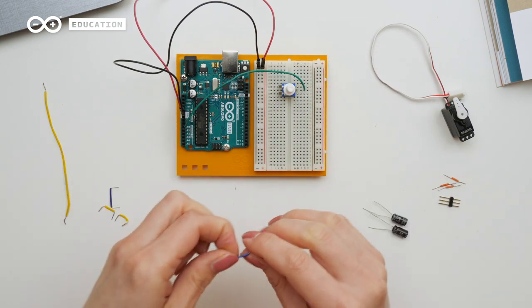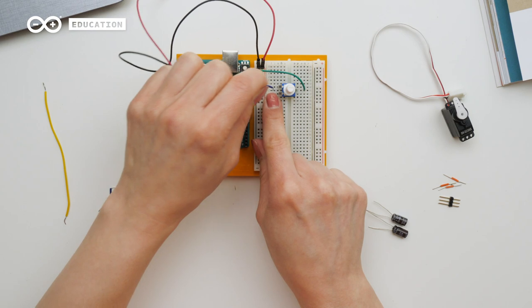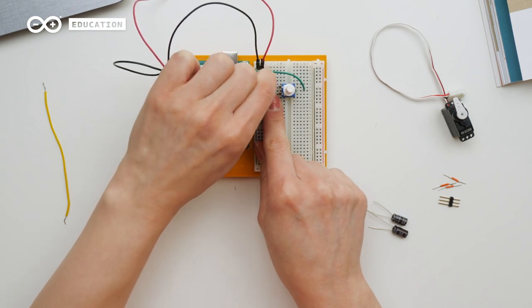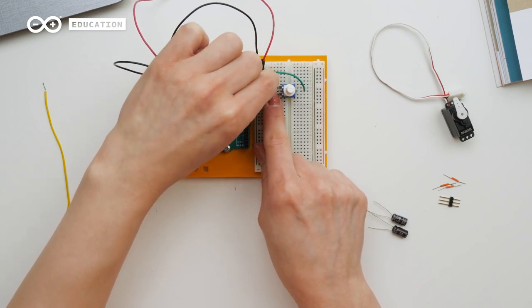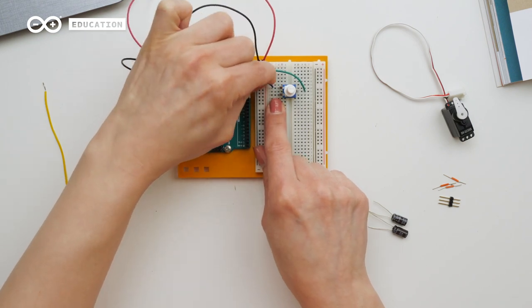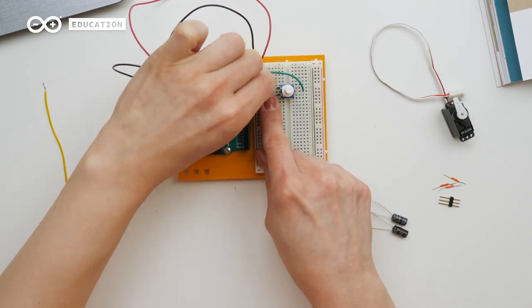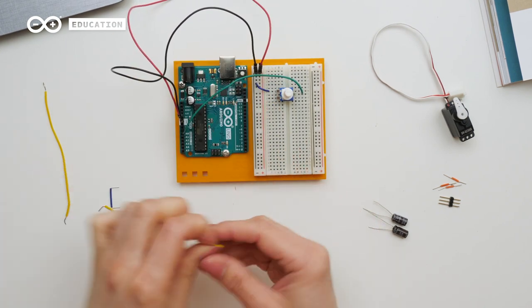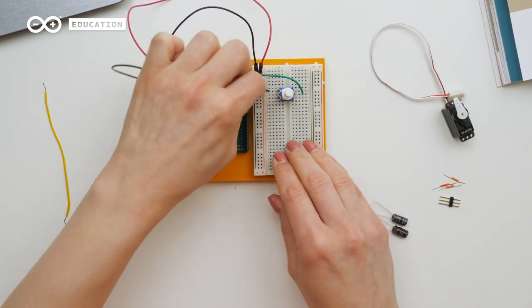I connect one leg to ground and make sure there's still a hole between the wire and potentiometer. We need that for the capacitor later, and then one to power.